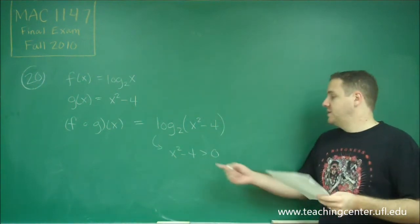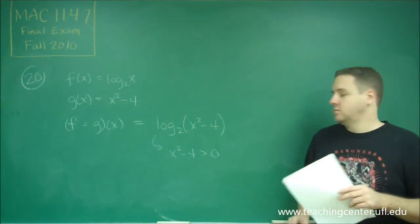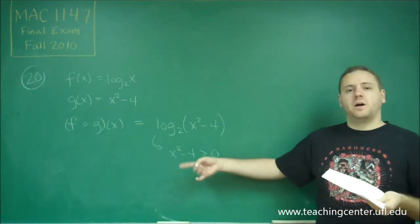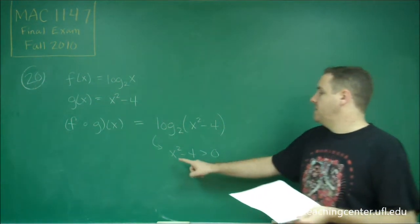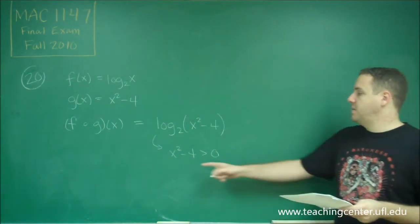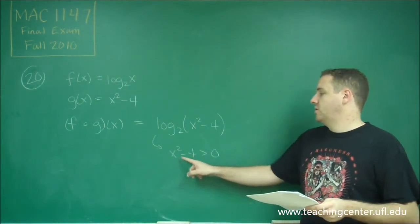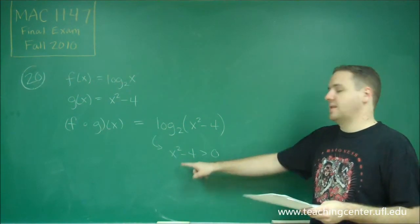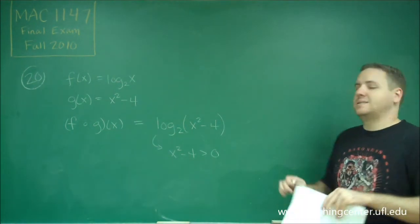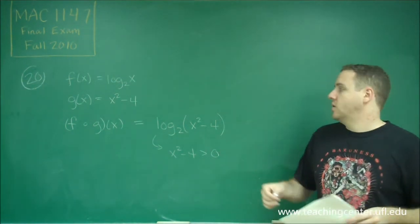So we just need to figure out when is this true. Well, this one is pretty easy to figure out. Just think about it here. This is exactly equal to 0 when x is 2 or negative 2. It's going to be bigger than 0 if x is 3, that certainly works, or if it's negative 3. So anything that's outside of negative 2 and 2 works.